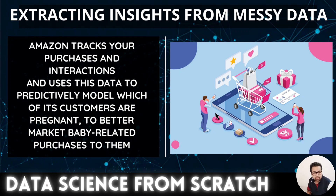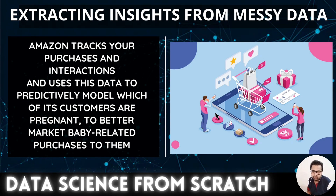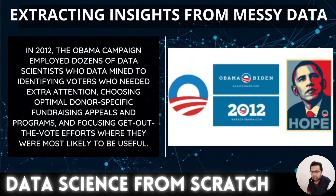Amazon tracks your purchases and interactions and uses this data to predictively model which of its customers are pregnant, to better market baby-related purchases to them. This is an example of a recommendation engine. Whenever you do online shopping you see recommendations specific to you — Amazon recommends only things you are most probable or willing to buy, extracting lots of data about your behavior and purchasing habits.